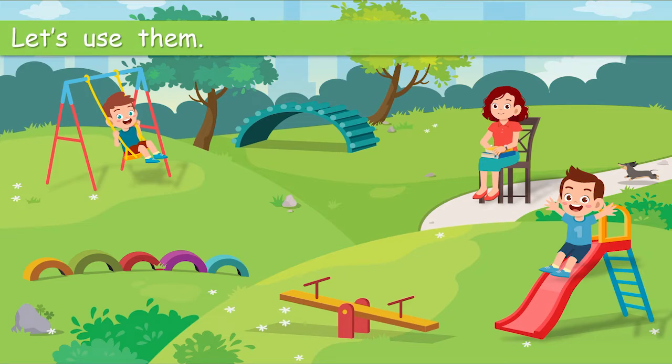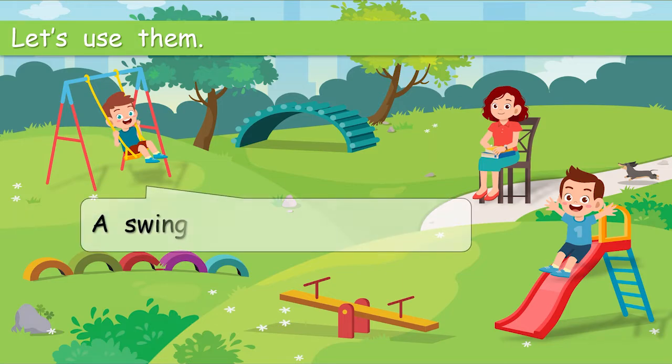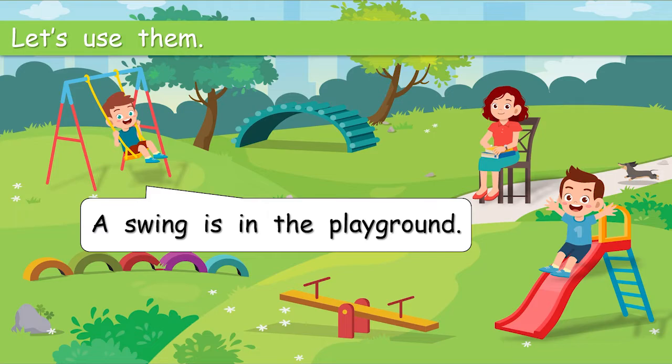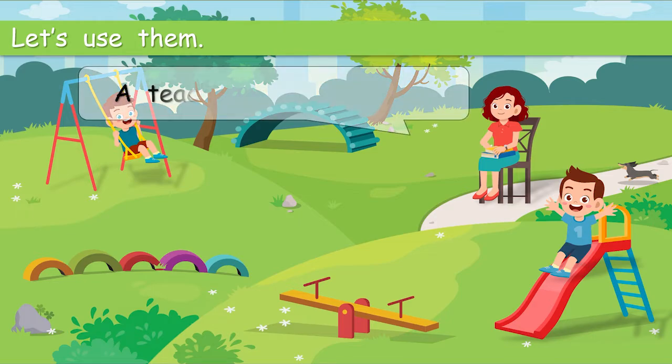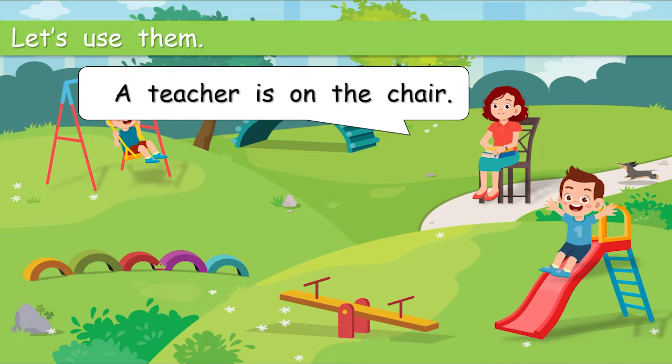What a very nice place to be. So let's use them. Let's use the articles and nouns. So here we've got two nouns. Swing. Playground. Can you say the sentence with the articles? A swing is in the playground. Great. What's next? Again, we've got two nouns. Teacher. Chair. So we've got two articles. A. The. Let's say the sentence. A teacher is on the chair. Super job.